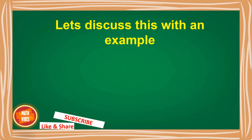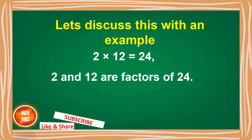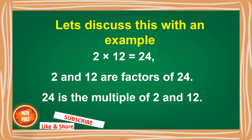Let's take another example. Suppose we have 2 × 12 = 24. Now here 2 and 12 will be called the factors, and 24 will be called the multiple. So 2 and 12 are the factors of 24, and 24 is the multiple of 2 and 12.